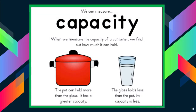We can also measure capacity. When we measure the capacity of a container, we find how much it can hold. The pot can hold more than the glass — it has a greater capacity. The glass holds less than the pot; its capacity is less.